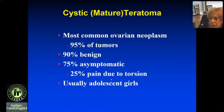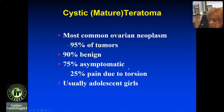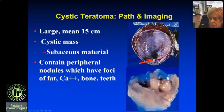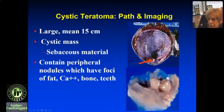The teratoma is the most common ovarian neoplasm of the ovary. Most are benign. They may present just as a large mass, but they can cause pain due to torsion or just pressure from the large mass. Most of what we're talking about is the adolescent population. They're big — pathologically mean diameter of 15 centimeters. They're cystic because they have a lot of sebaceous material, and sebum is liquid at body temperature. They contain a peripheral nodule, the Rokitansky nodule, which can contain fat.